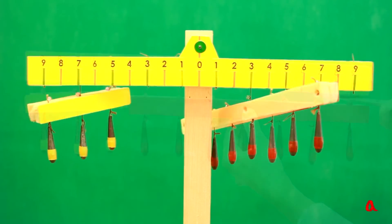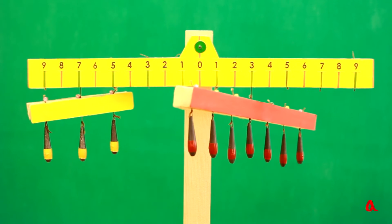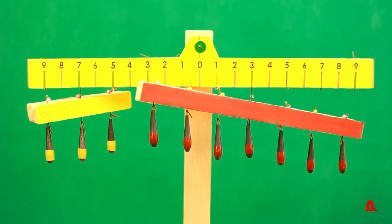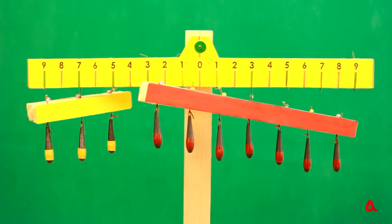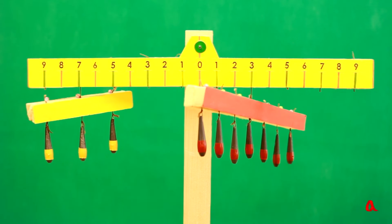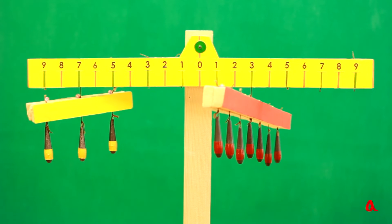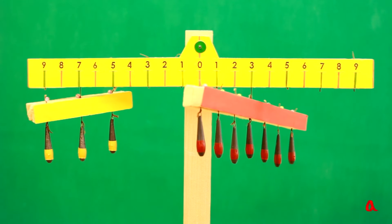So we can see that 7 loads on a 3-unit arm balance up 3 loads on a 7-unit arm. We have shown how this proof works on a particular example. But general reasoning for any number of loads is done in the same way.